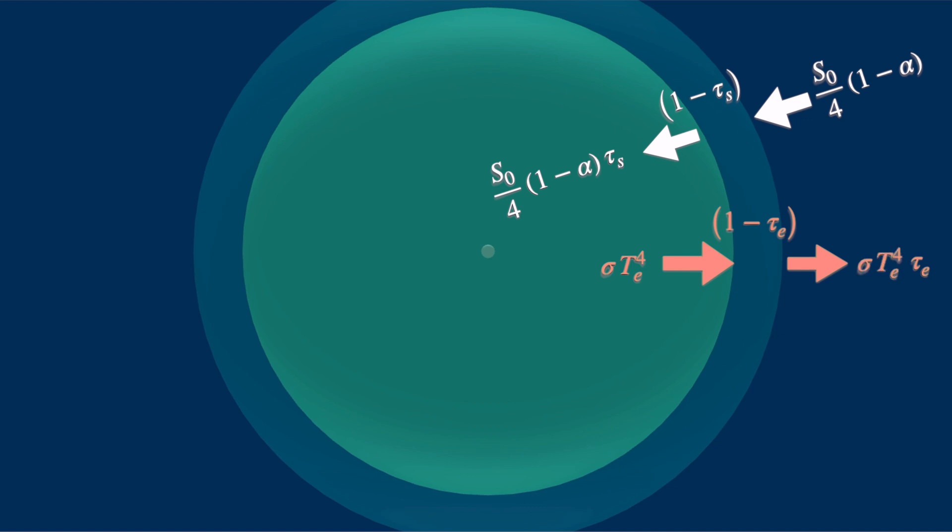There is an additional transfer from Earth to the atmosphere in the form of evaporation and convection, which is the sensible heat.